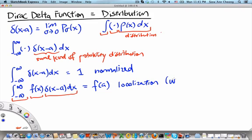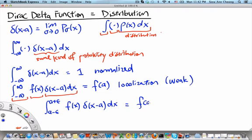Actually, this is a weak localization property. There is a stronger way to write the localization property: the integral from (a-ε) to (a+ε) of f(x)δ(x-a)dx equals f(a). So this is the strong localization property, which says that the contribution to the final integral value of f(a)